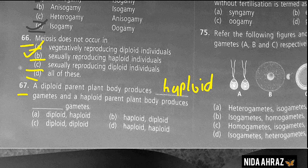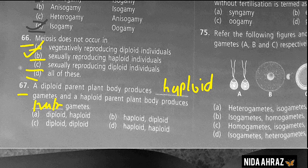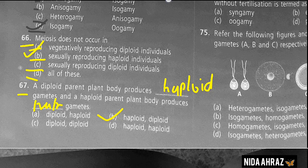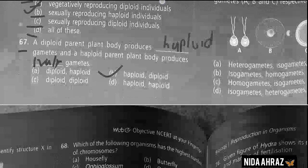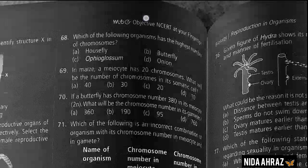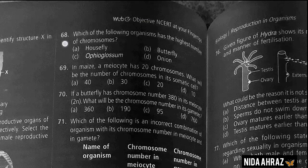A diploid parent plant body produces haploid gametes, and a haploid parent plant body also produces haploid gametes, which means option B is the correct choice.